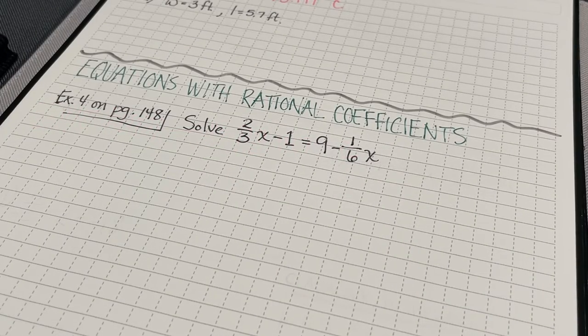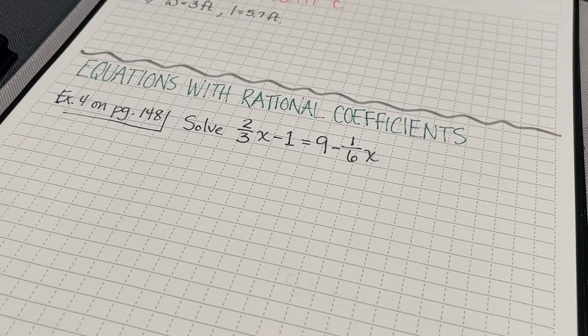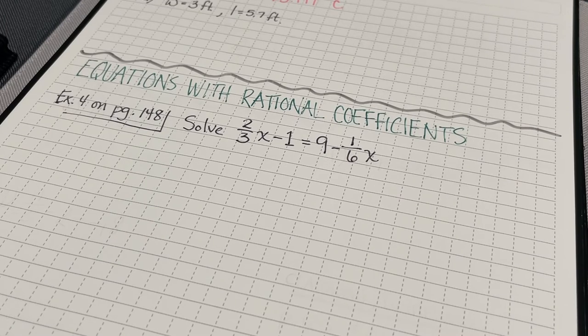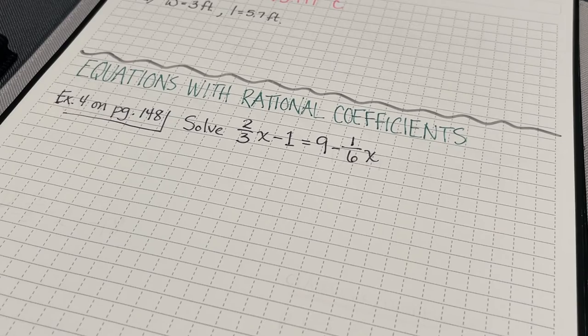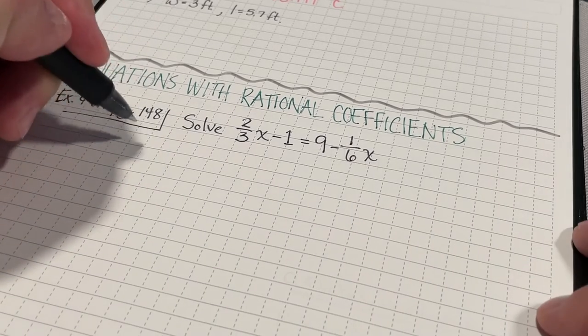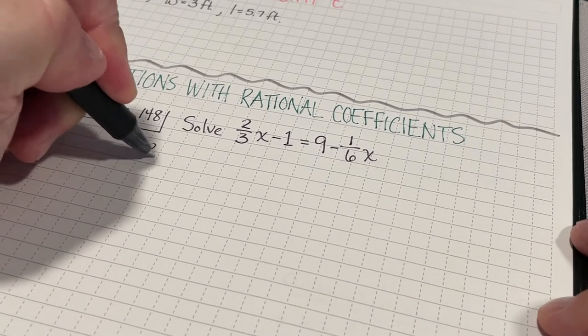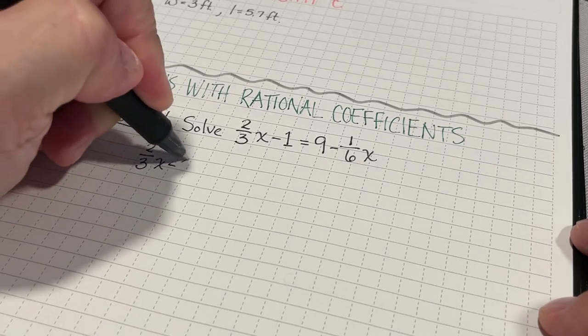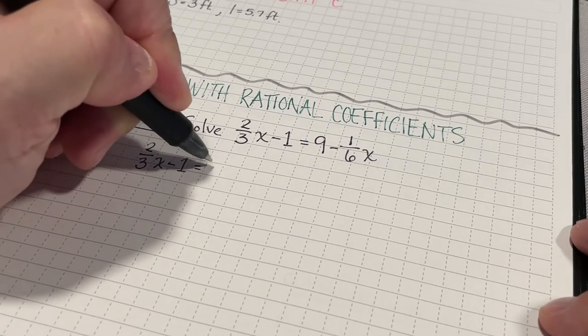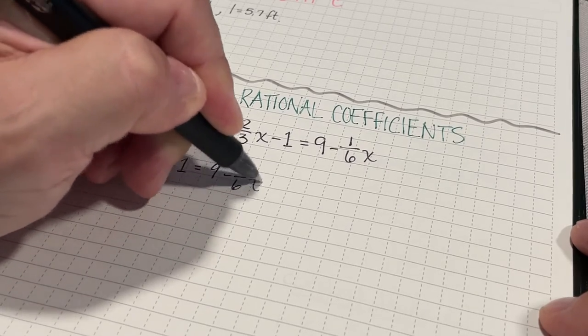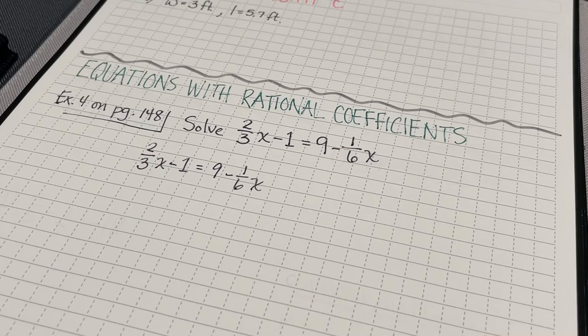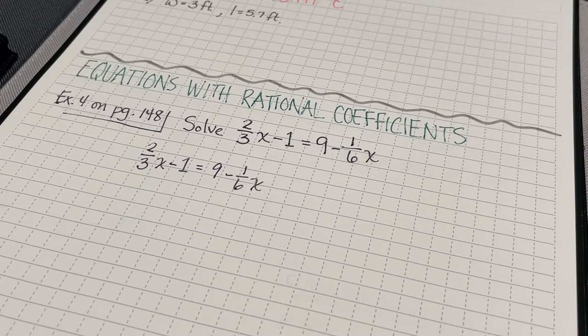Example four on page 148 involves rational coefficients. So, if you notice, we have a two-thirds x and we have a negative 1/6x. We're going to have to deal with that at some point. So, I'm going to just rewrite this as two-thirds x minus 1 equals 9 minus 1/6x. I often just rewrite the problem just so that it's a place for me to start working. It gets me into the problem.